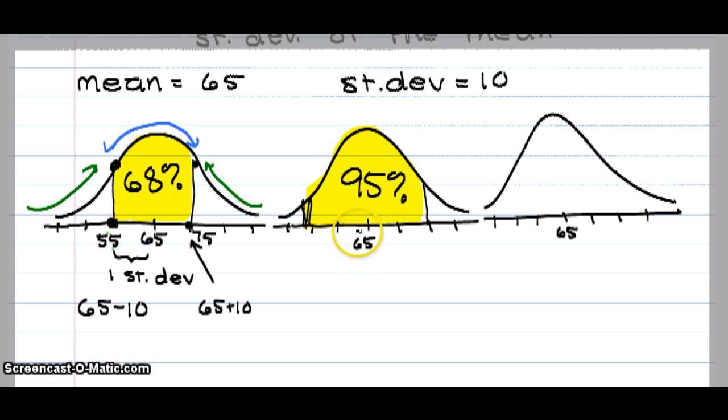65. If we take 65 minus 2 times 10, I'm at 45 at this point. This point is 85.